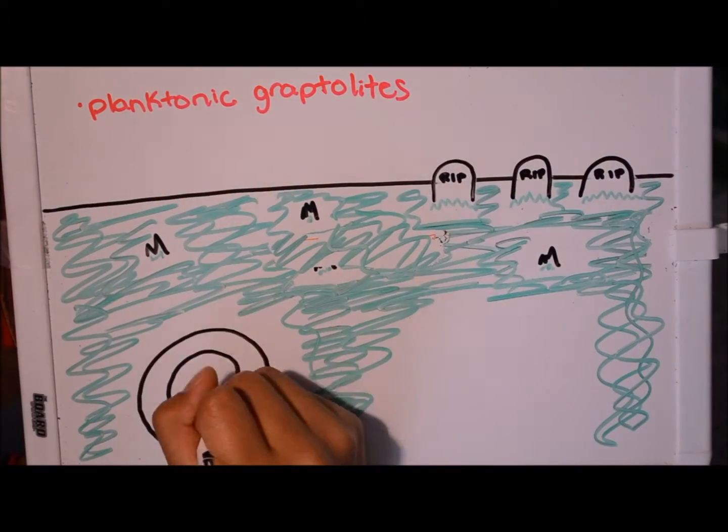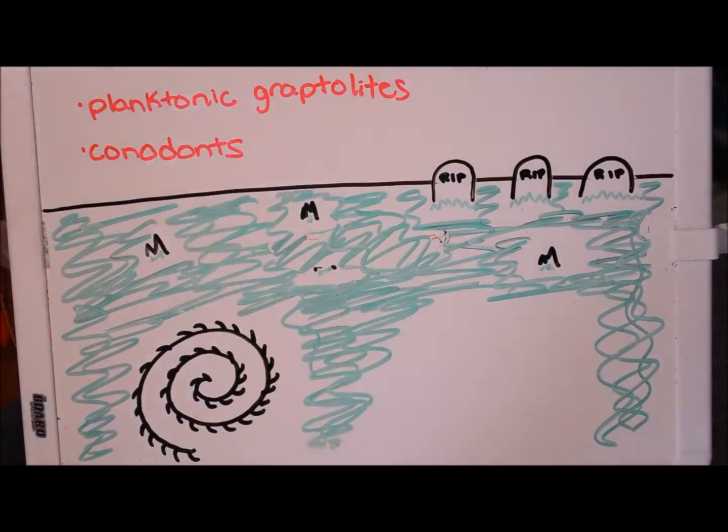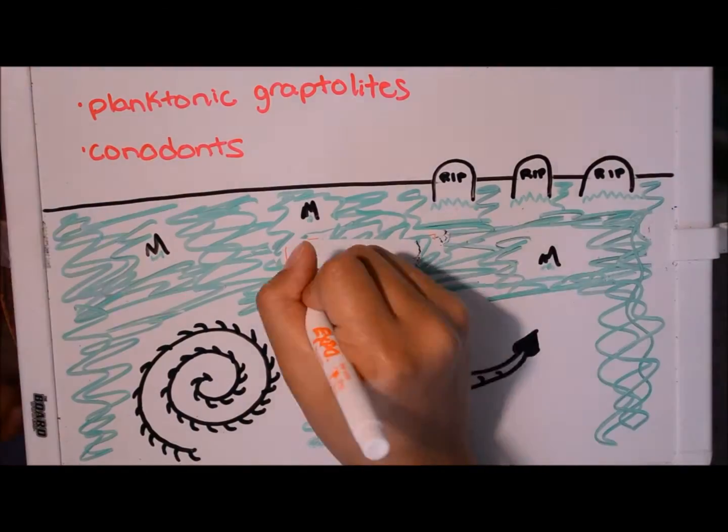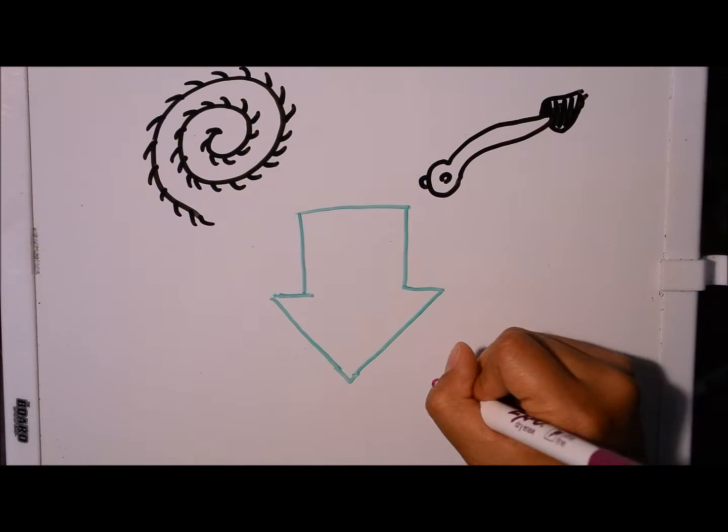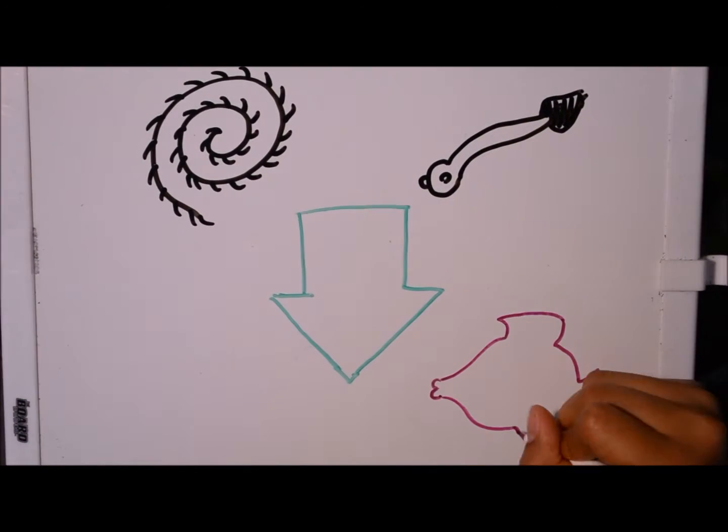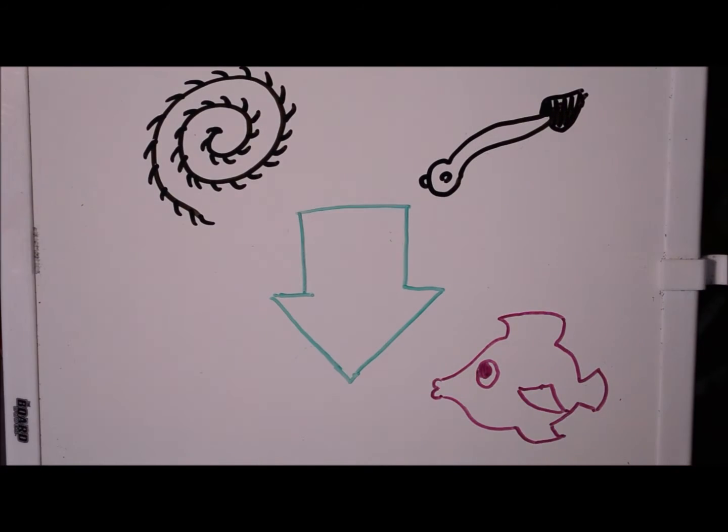The winners of this game of life were the planktonic graptolites and the conodonts. Now because these two survived, they caused the creation of a whole new generation, the jawed and bony fish.